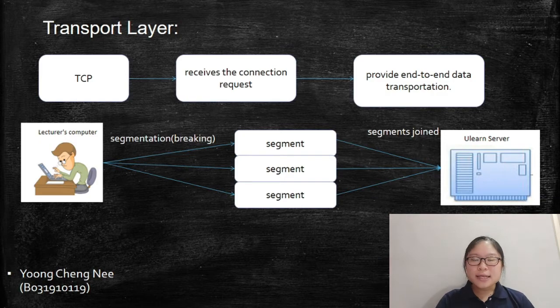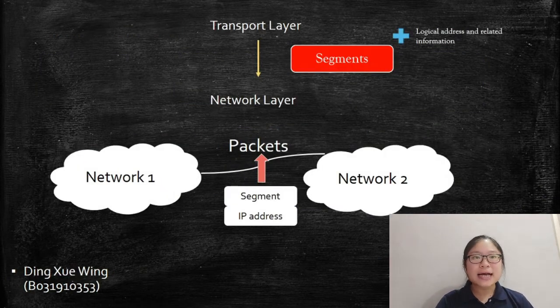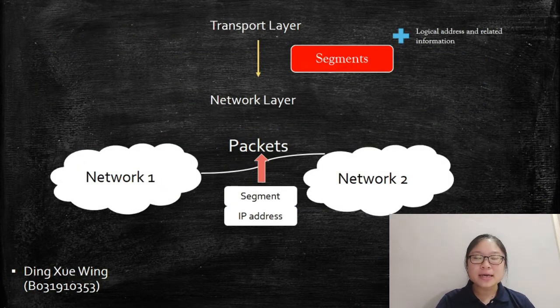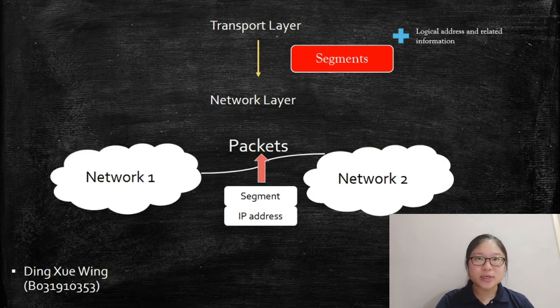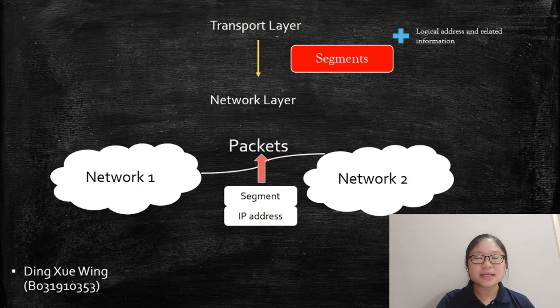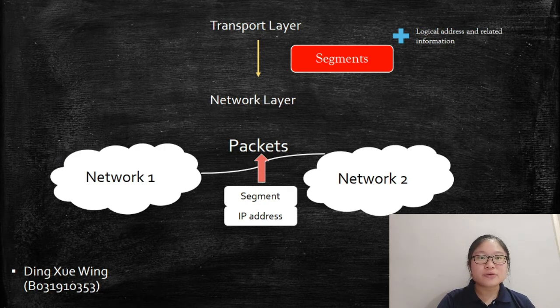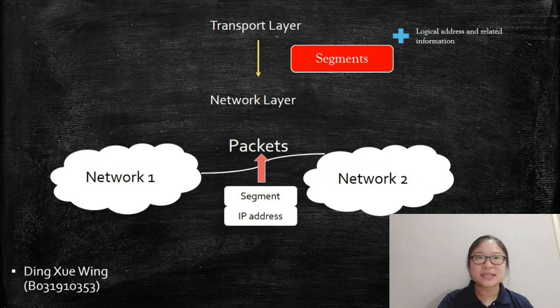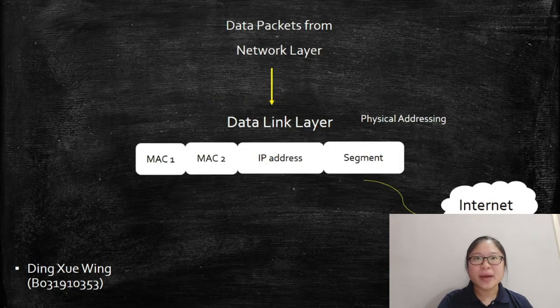Next, the network layer will take data segments from the transport layer and add logical addresses to it. Once the logical address and other related information are added to the segments, it becomes packets. Router will use IP addresses to make routing decisions to forward data packets to its final destination. Now, the network layer has routable packets.